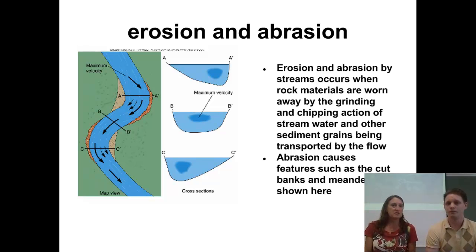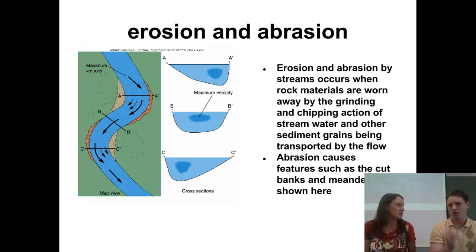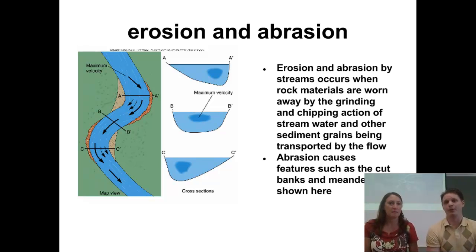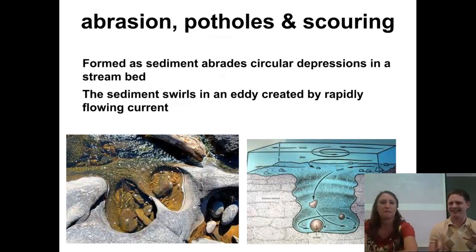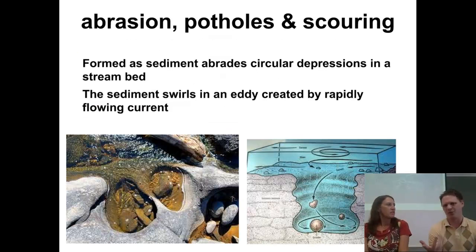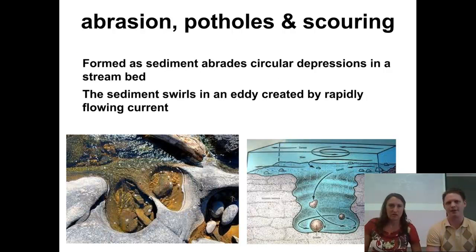So we get some things like curves in the river. We get what are called meanders, and there are unique features going on on either side of these features. We'll get into that in just the next couple of slides.